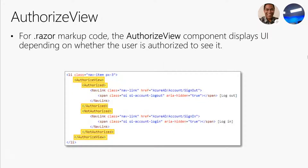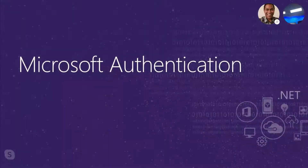The AuthorizeView component is used in your Razor markup. It's very simple — you have your AuthorizeView component with an Authorized template and a NotAuthorized template. What's shown in the Authorized template only shows when the person is logged in, and NotAuthorized shows the opposite.